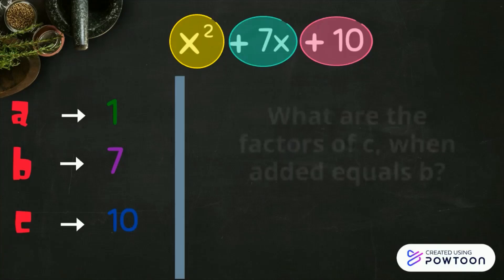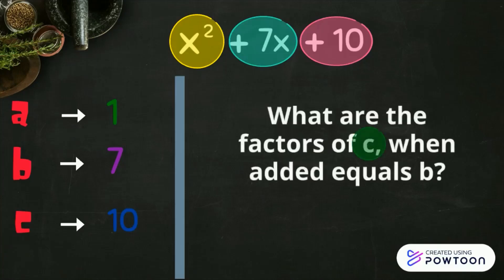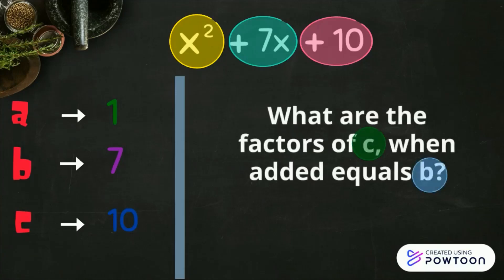What are the factors of c when added equals b? Remember, our b is 7, our c is 10. We are to list down the factors of 10.